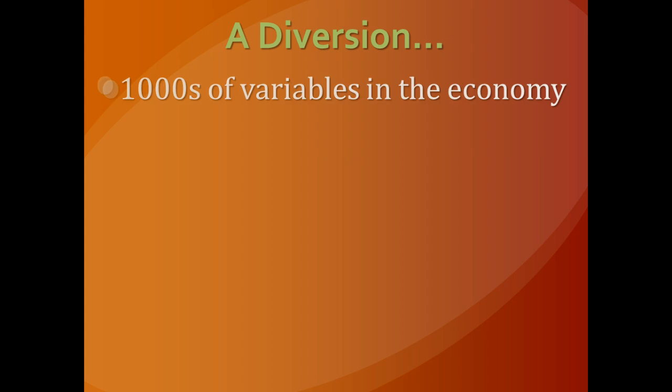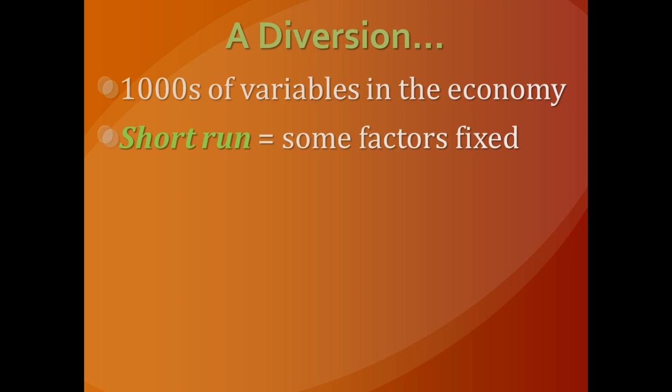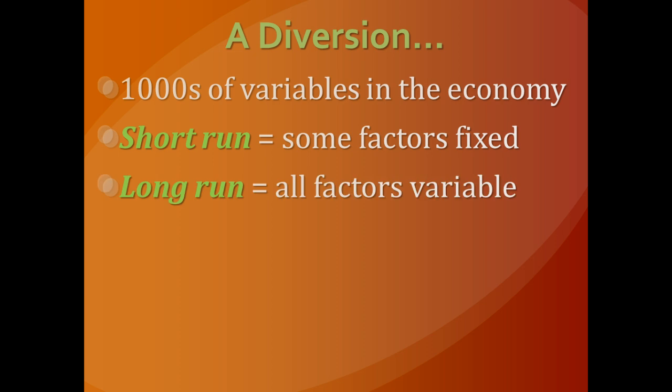Before we get too far, let's differentiate between long and short run. In the economy there are literally thousands of variables all at work at one time affecting prices and output. In the short run, we will assume that at least some of those variables become fixed. While some factors can still vary, at least in the short run some of them can't change. In the long run, however, all the factors that affect price and output are variable, and that has a huge impact on the shape of the curve.